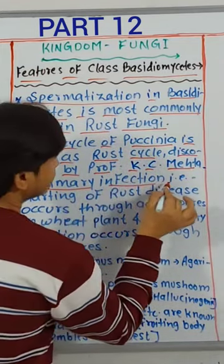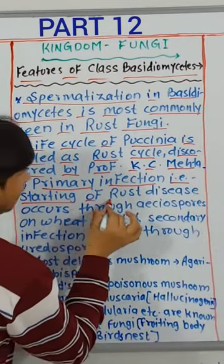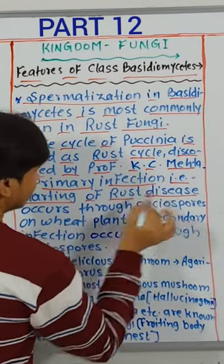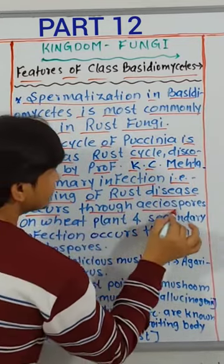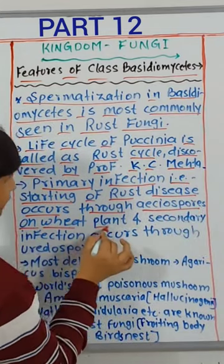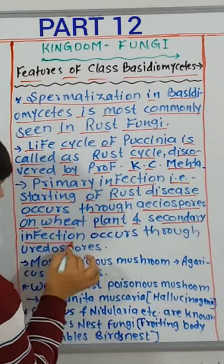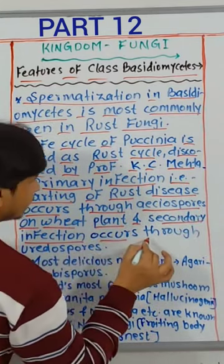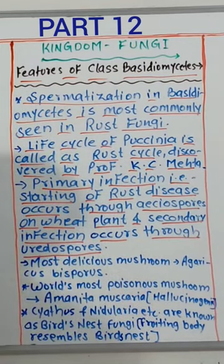Primary infection, i.e. the starting of rust disease, occurs through aeciospores on the wheat plant, and secondary infection occurs through uredospores.